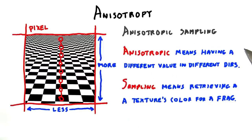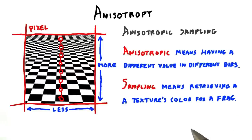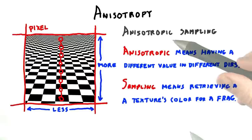Anisotropic means having a property that has a different value when measured in different directions. Sampling means retrieving some piece of information meant to represent the whole. For example, a fragment shader will take a sample from a texture's mipmap pyramid to represent the texture's color at that pixel.